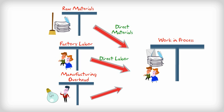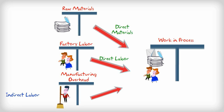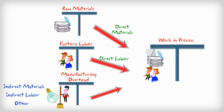In manufacturing overhead, we include the janitor — who is indirect labor — and who cleans the factory space so we can work. He will also need a broom to clean, which is an indirect material. The section named 'other' includes the electricity, the factory space you're renting, and so on. The amount of manufacturing overhead we apply to the work in process account is an estimate.